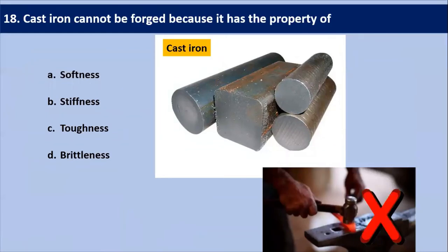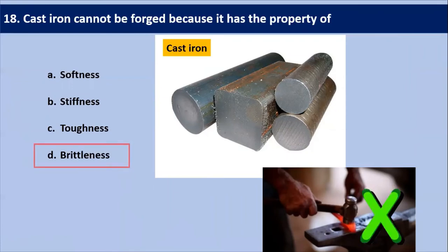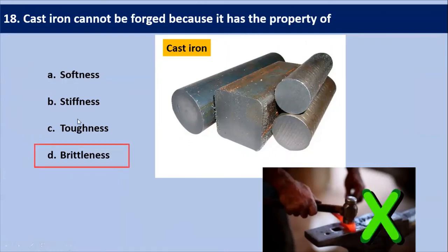Cast iron cannot be forged because it has the property of? Cast iron has the property of brittleness. Brittleness means the material breaks with little or no deformation. As the name suggests, cast iron is meant to be cast. So it cannot go for the forging process — otherwise it will break. The property of cast iron that prevents forging is brittleness.